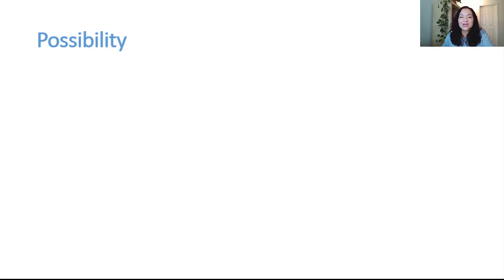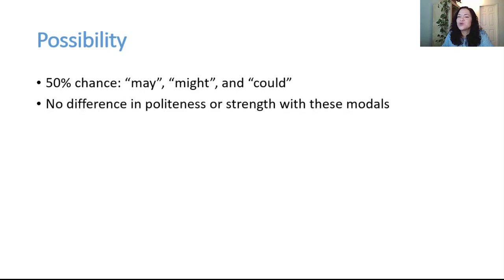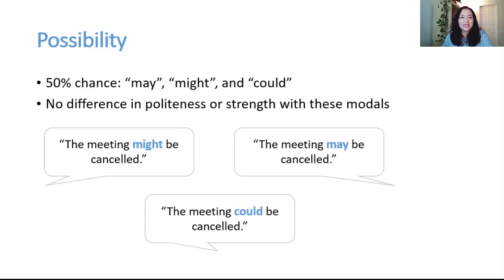Possibility. When we express possibility or something where there is a 50% chance of something happening, we use may, might, and could. There is no real difference in politeness or strength with these modals for possibility. The meeting might be cancelled, the meeting may be cancelled, the meeting could be cancelled.